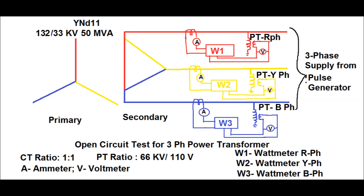The voltmeter, wattmeter, and ammeter are connected as shown in this diagram. W1 is the wattmeter for the red phase, W2 is the wattmeter connected in the Y phase, and W3 is the wattmeter connected in the B phase. A represents the ammeter and B represents the voltmeter. The ammeter is connected in all phases at the secondary of the CT, and the wattmeters are connected using the CT secondary current and PT secondary voltage.